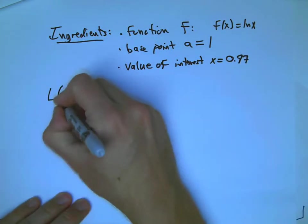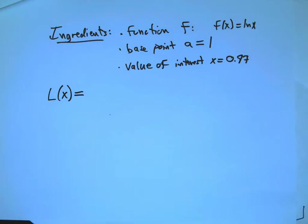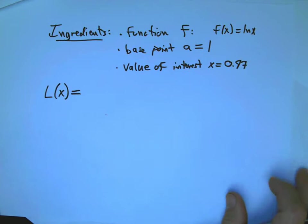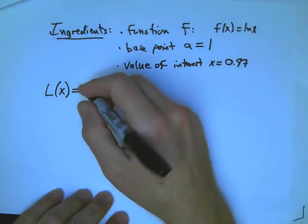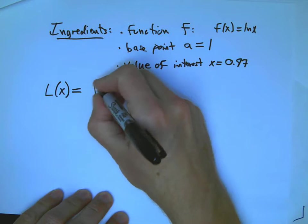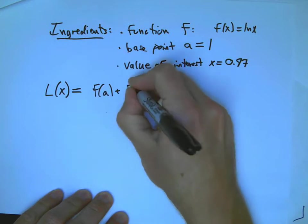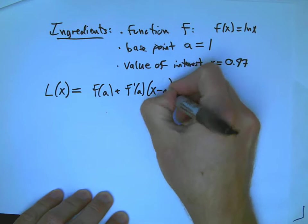And we always do the same kind of thing. We find the linearization, which is just thinking of the equation of the tangent line as a function. And that's going to always be f of a plus f prime of a times x minus a.